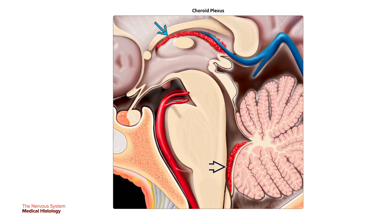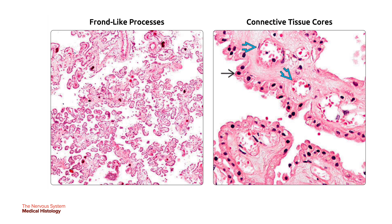This graphic shows the sites of the choroid plexus in the brain, including the roof of the third ventricle in a single blue arrow and the fourth ventricle in a bold black arrow. On the left is a low-power view demonstrating the papillary frond-like processes. The papillary architecture of the choroid plexus is characterized by frond-like processes of vascular leptomeningeal tissue projecting into the ventricular lumen. On the right, the cores of loose connective tissue and dilated blood vessels are covered by a single cell layer of modified ependymal cells.